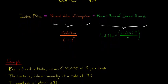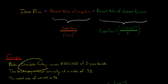So let's talk about a firm called Babu's Chocolate Factory. Babu's Chocolate Factory issues $100,000 of five-year bonds. And when I say five-year bonds, I mean that that $100,000, Babu's is going to have to repay that to the investors that buy the bonds five years from now.